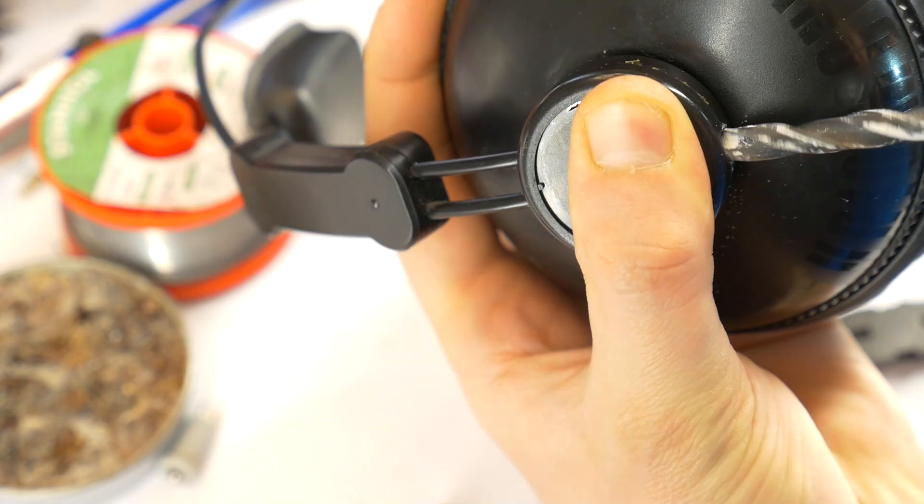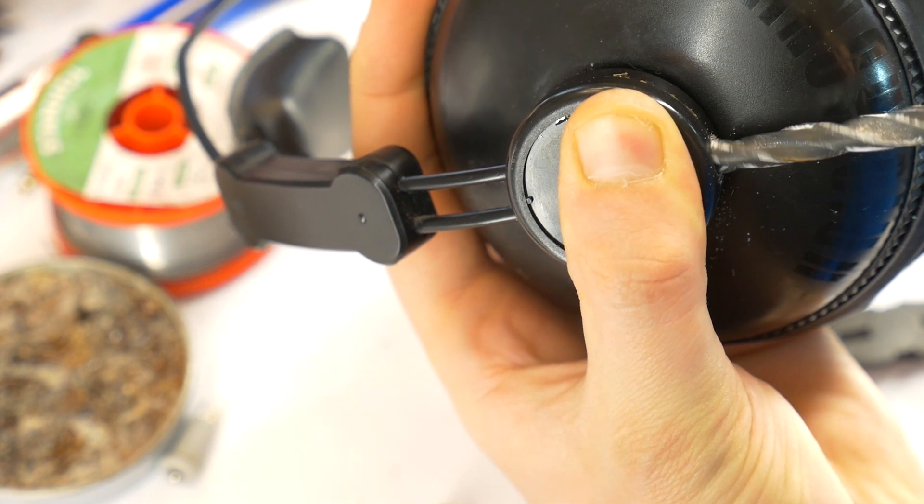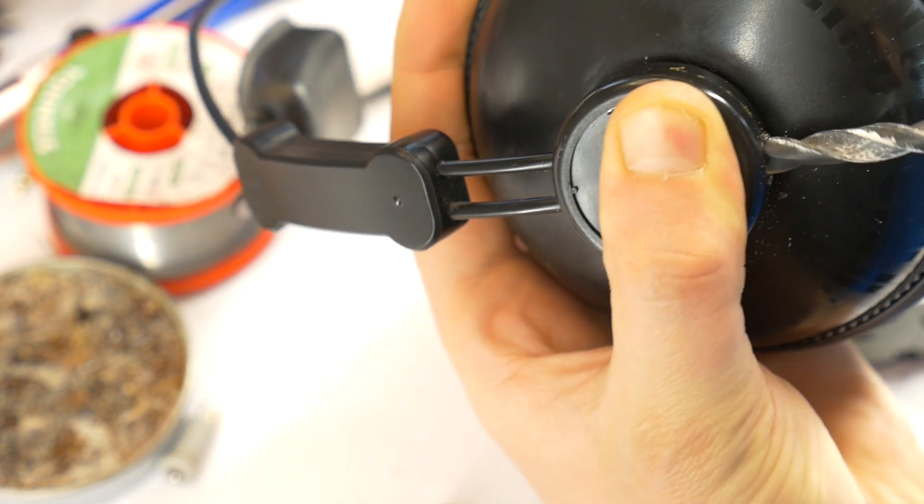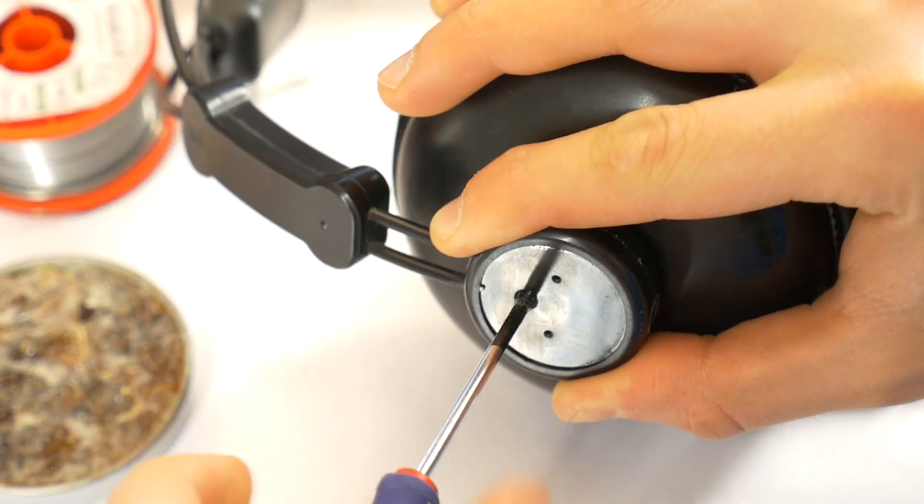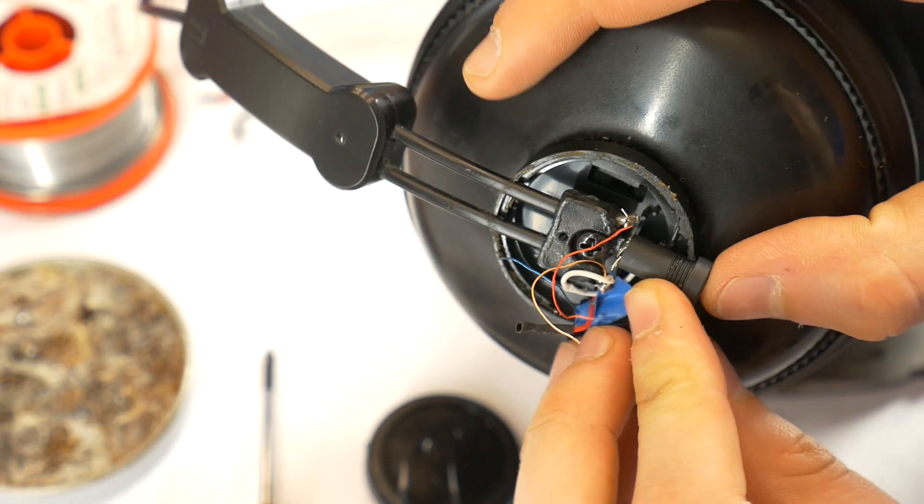Close the housing and drill a hole for the new socket. In my case this is an 8 mm diameter drill. Then unscrew the housing and check that the socket fits inside.